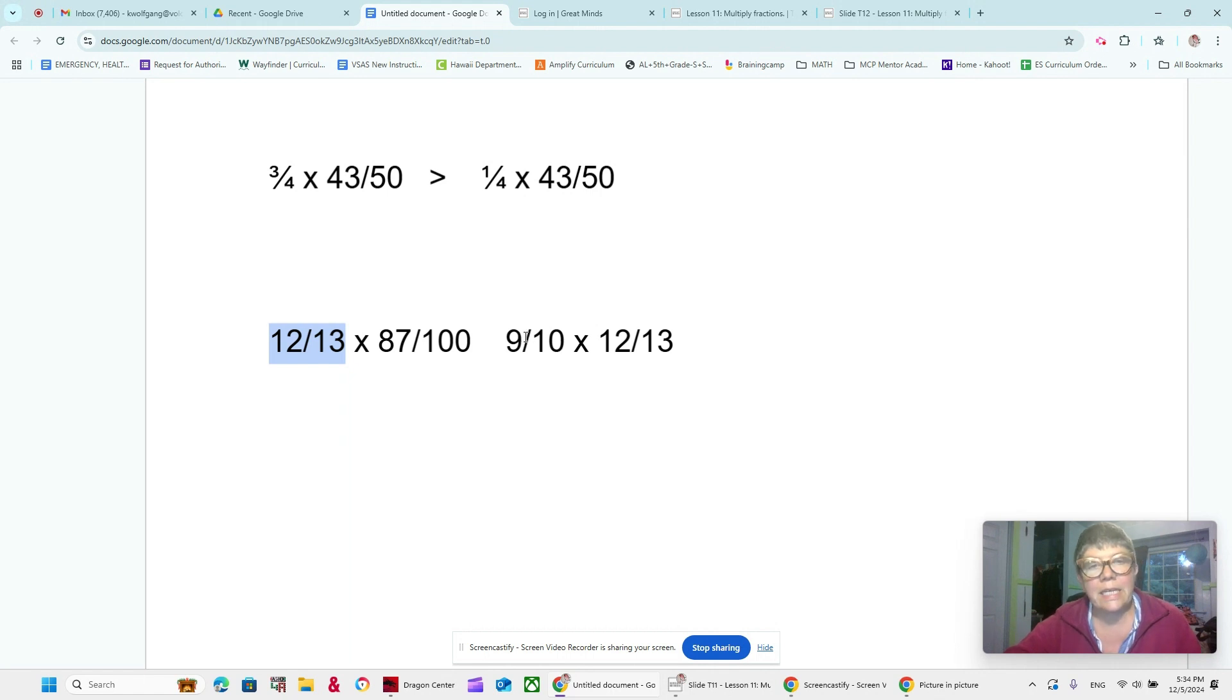So, nine-tenths is the same as ninety-hundredths. Now, which one's bigger? This one's going to be bigger because ninety-hundredths is closer to one versus eighty-seven hundredths is less than one, so that's, I mean, it's only by three-hundredths, right? But this one is closer to one, so this one is going to be greater and this one's going to be less than. Do you see that?